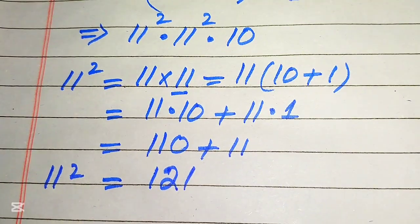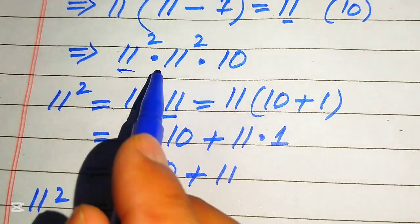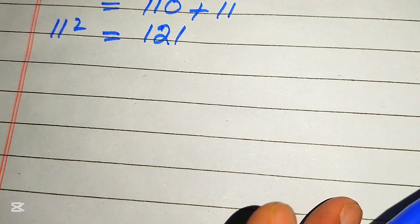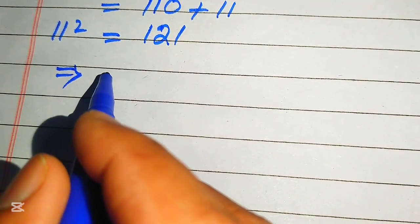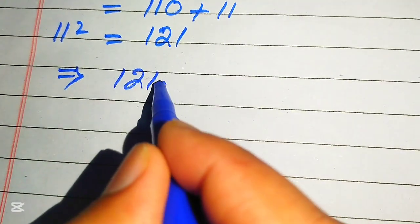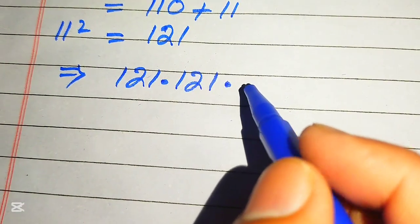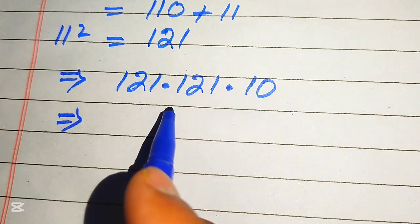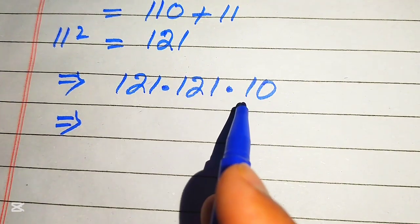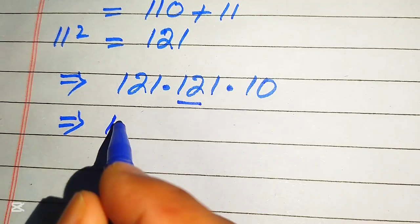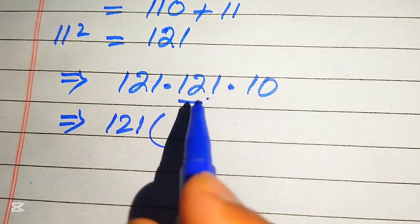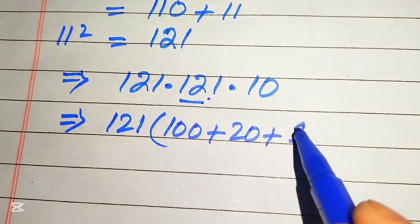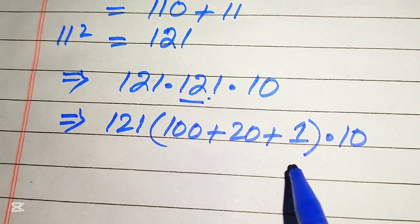Now we move back and substitute the value of 11 squared into both places. After replacing, our algebraic expression becomes 121 multiplied by 121, multiplied by 10. In the next step we first multiply these two values and then multiply the result by 10. We break 121 as 100 plus 20 plus 1, then multiply by 10 at the end.